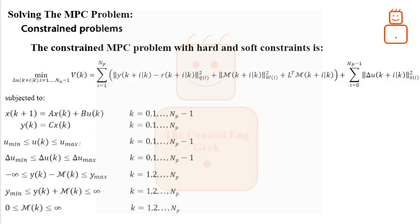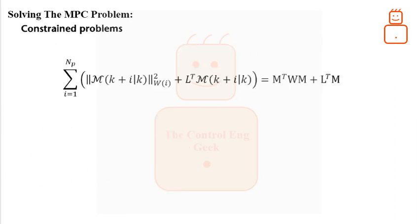Now, we are ready to deal with slack variables in the cost as well as in the constraints. The two terms in the cost function related to the slack variable capital M are shown by the red box. The terms are formulated in quadratic format as shown. Where the involved matrix and vectors are given as.